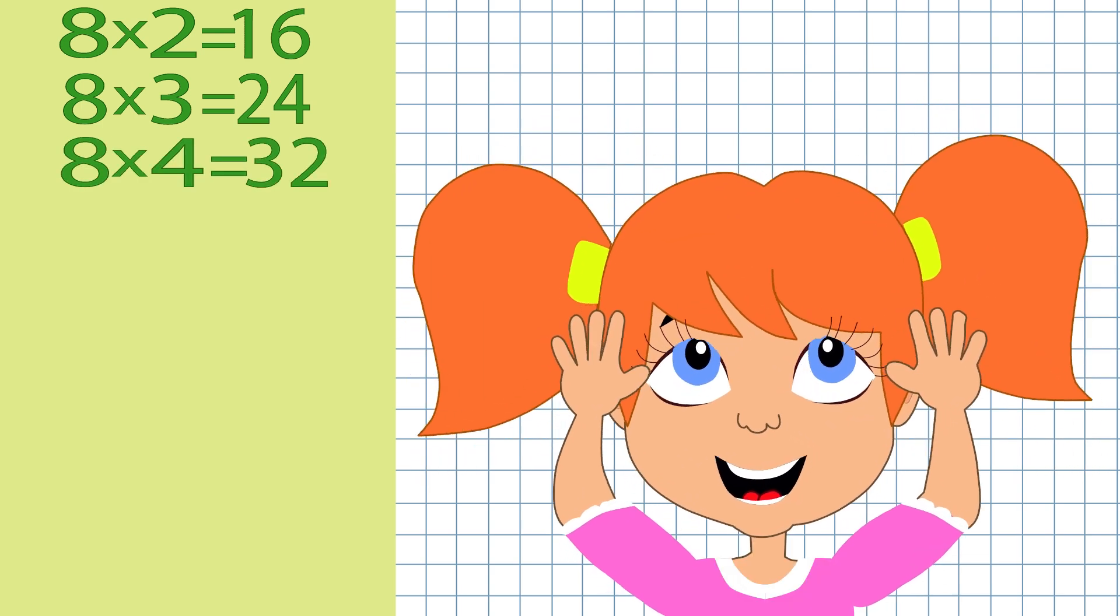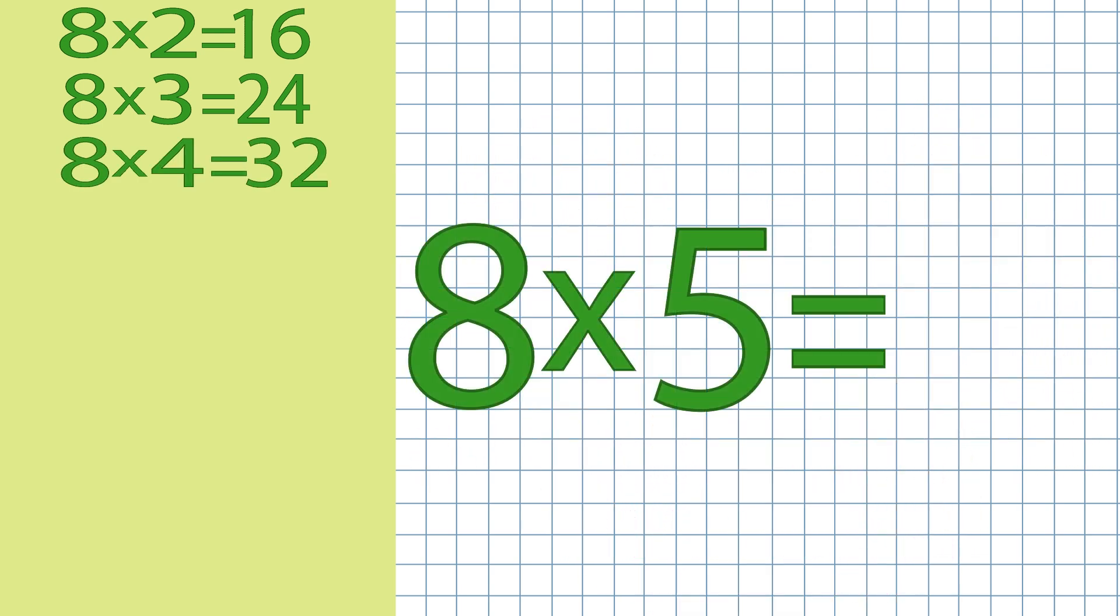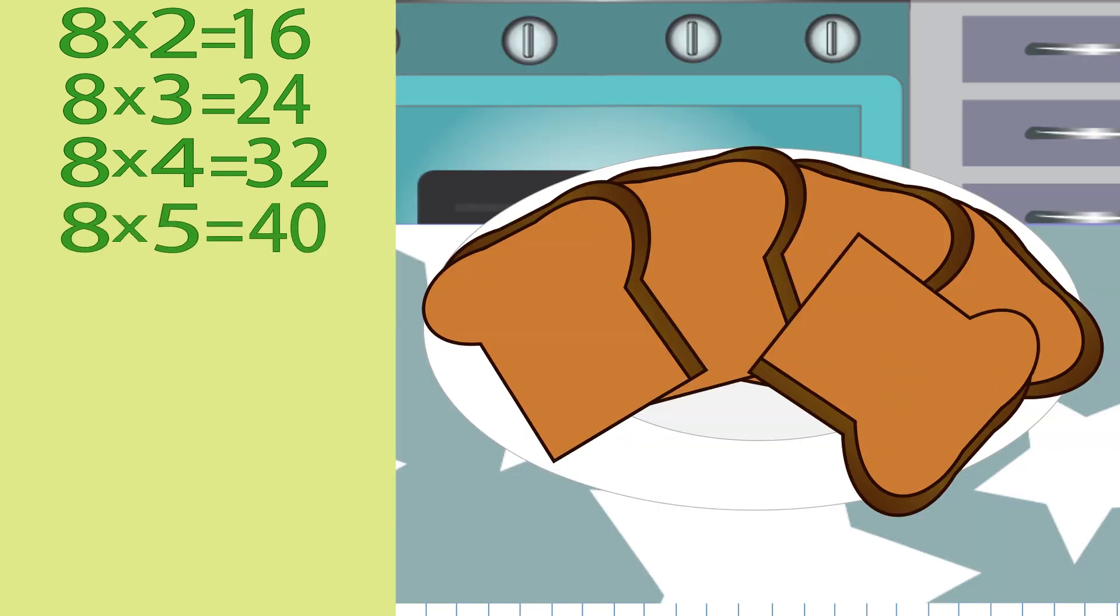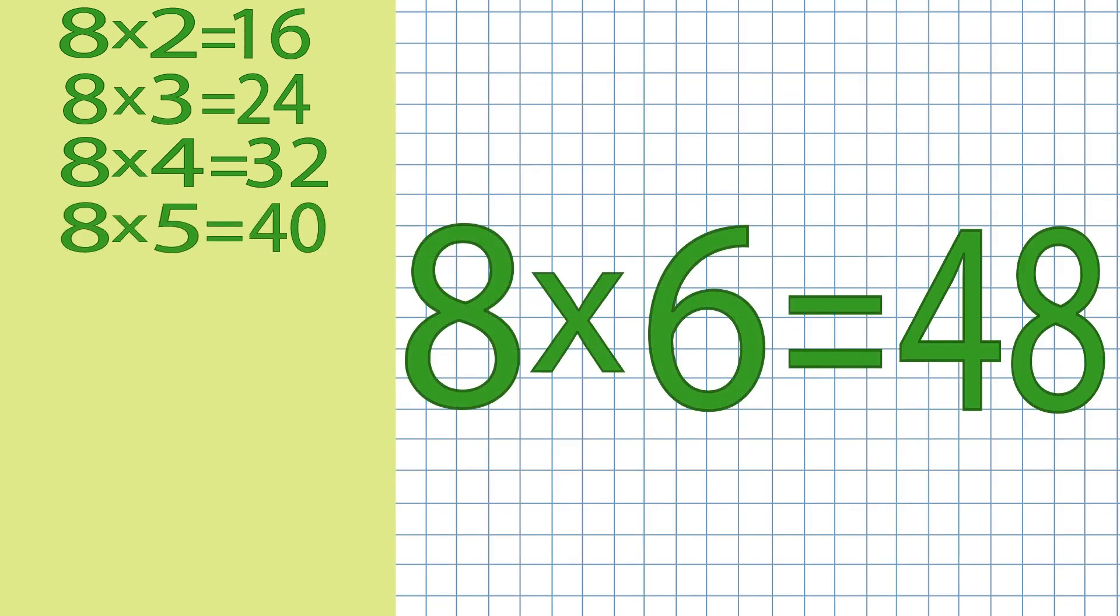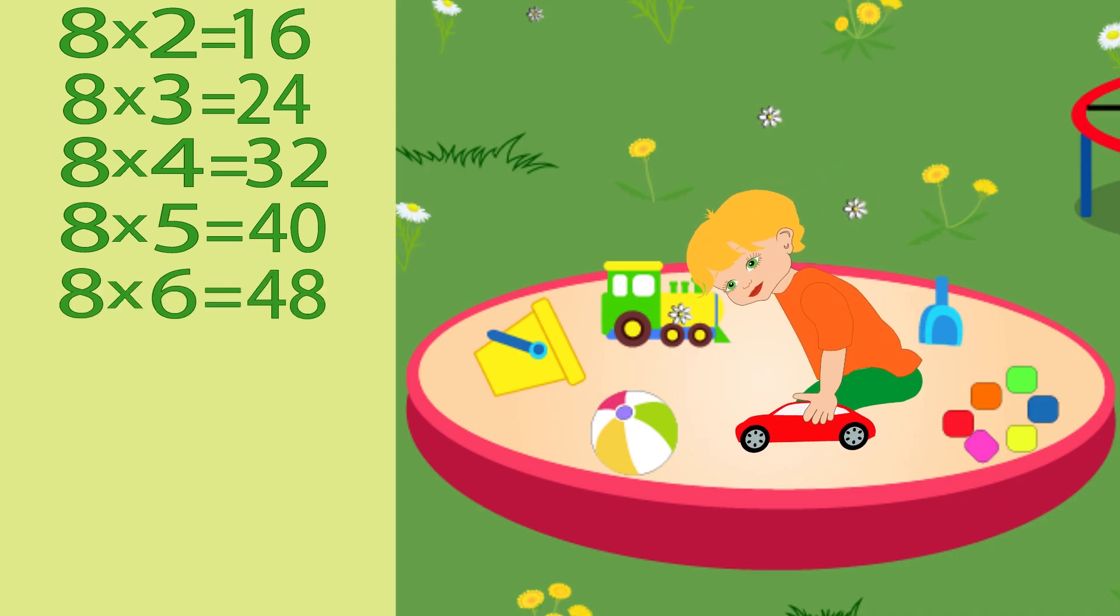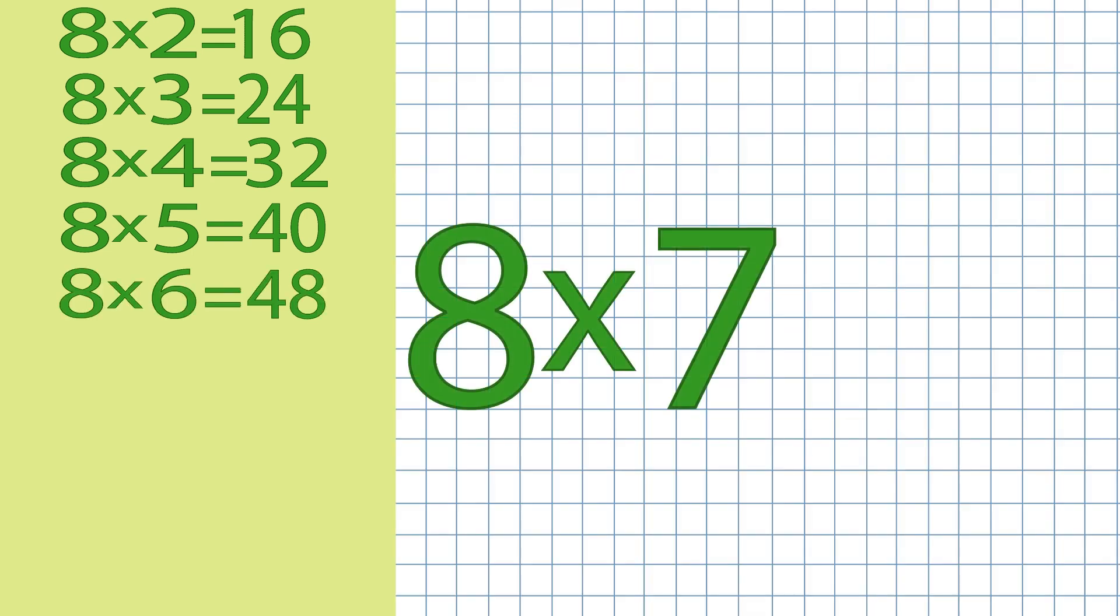Eight times four is thirty-two. Wheezy now is my head. Eight times five is forty. I have forty crust of bread. Eight times six is forty-eight. The boy his car will let us take.